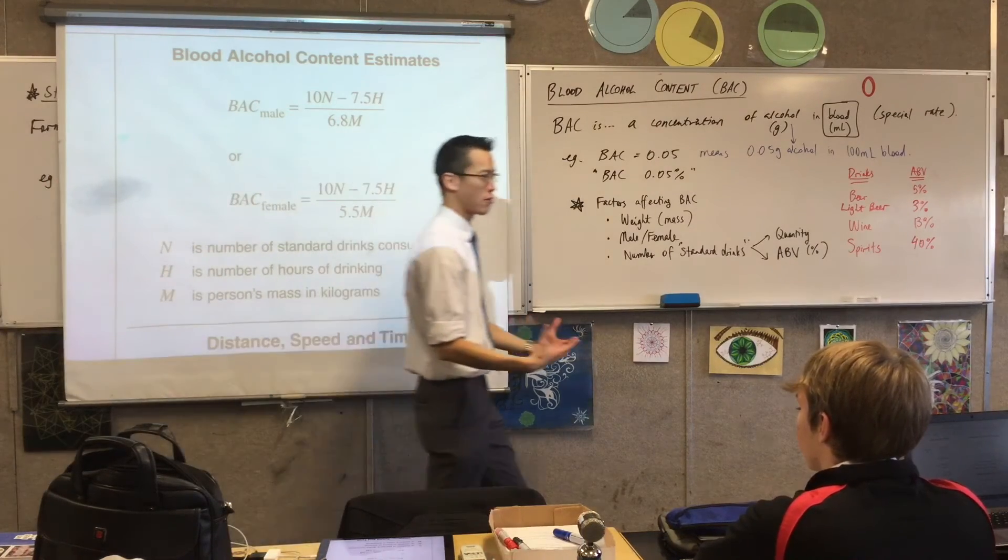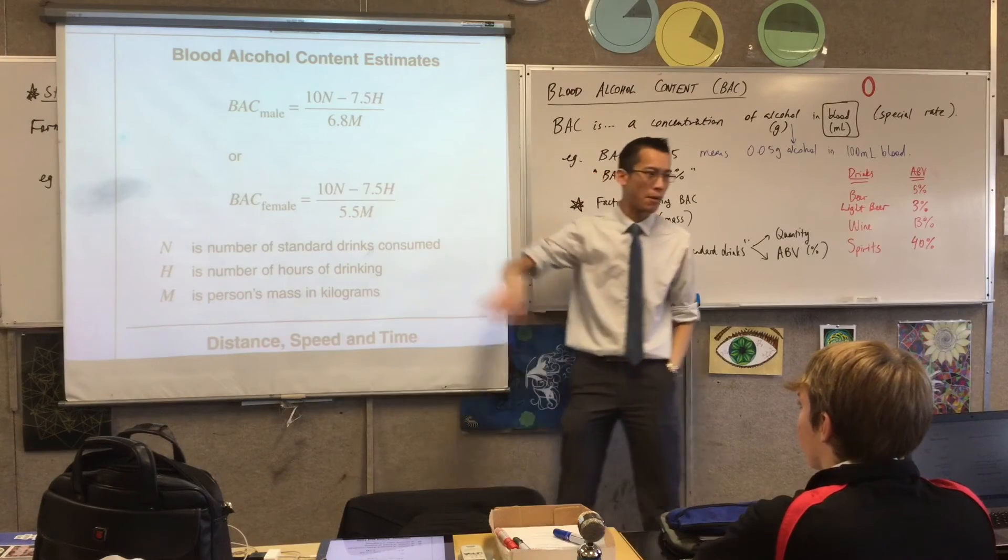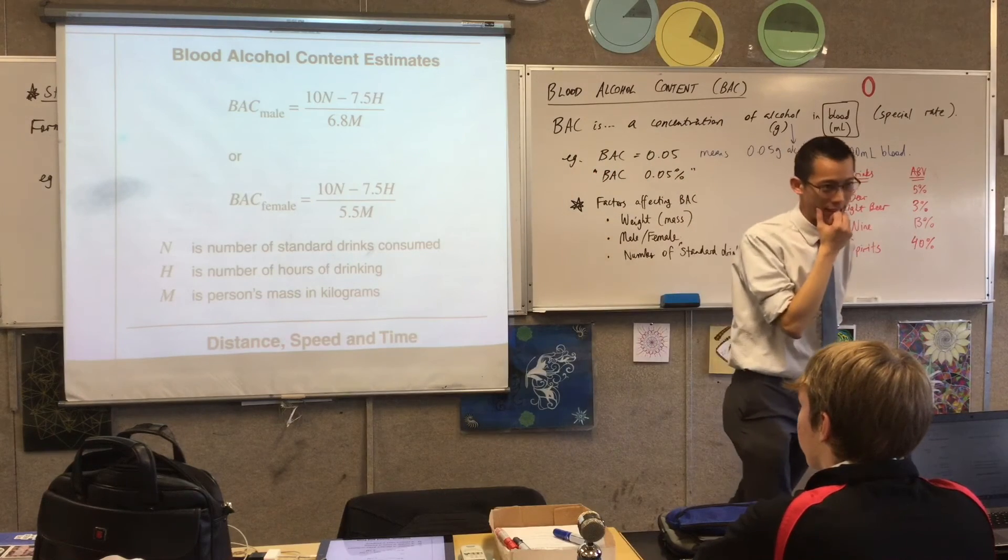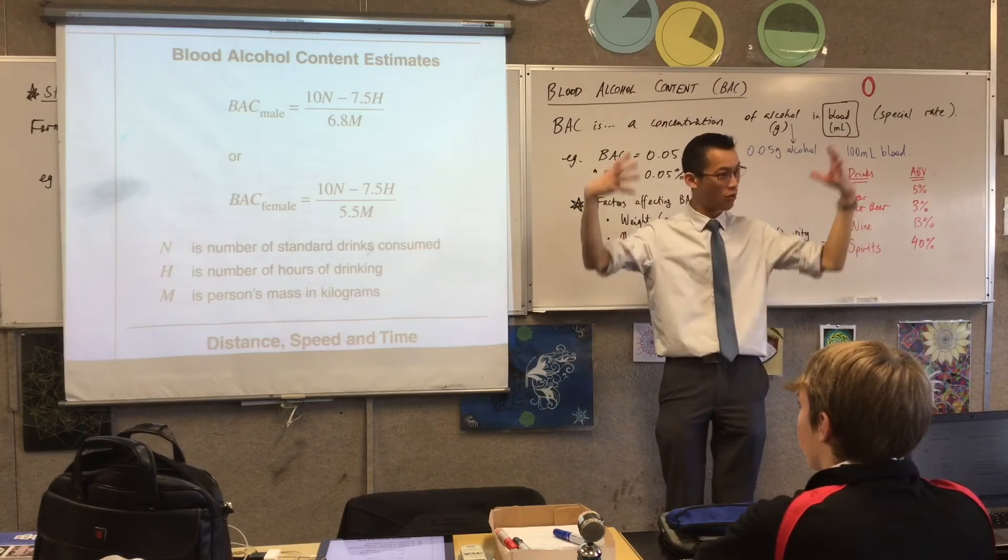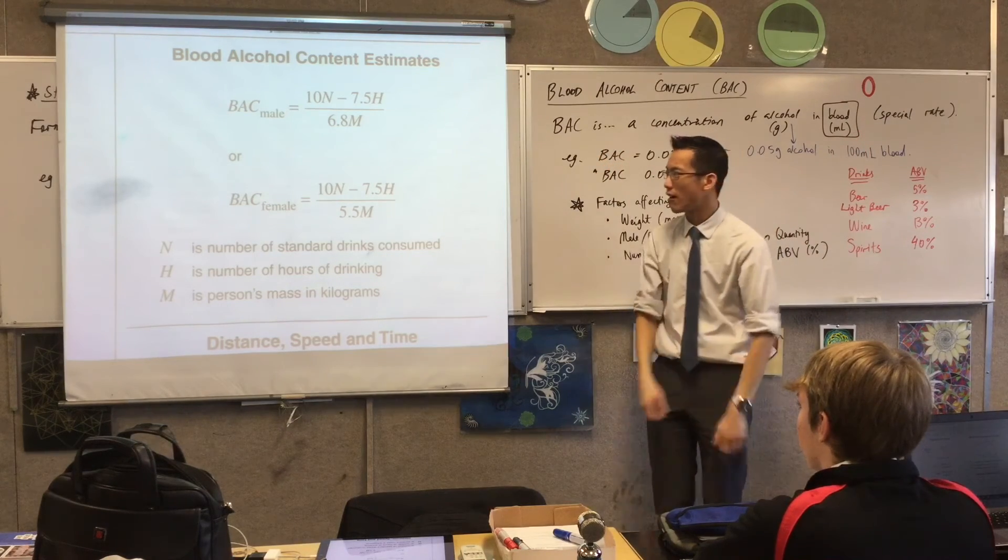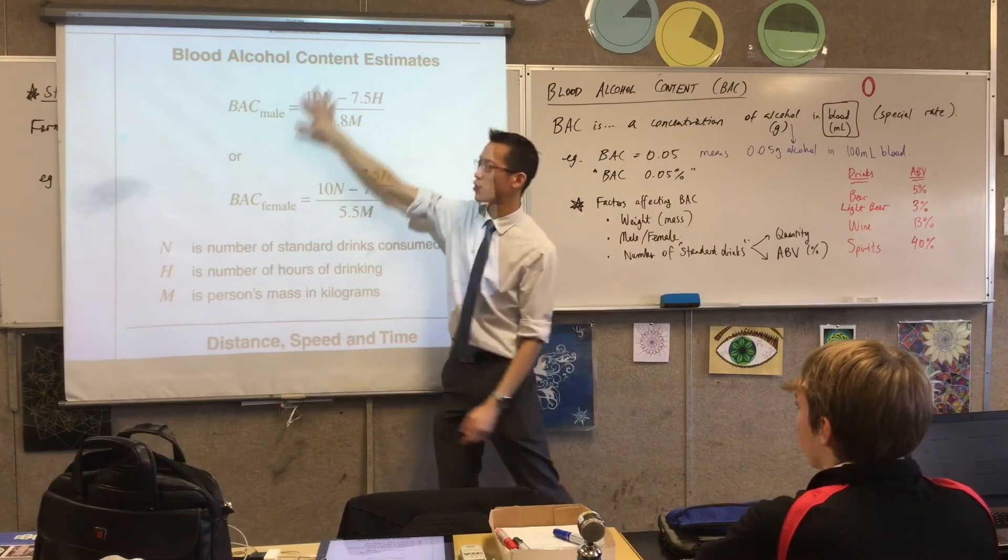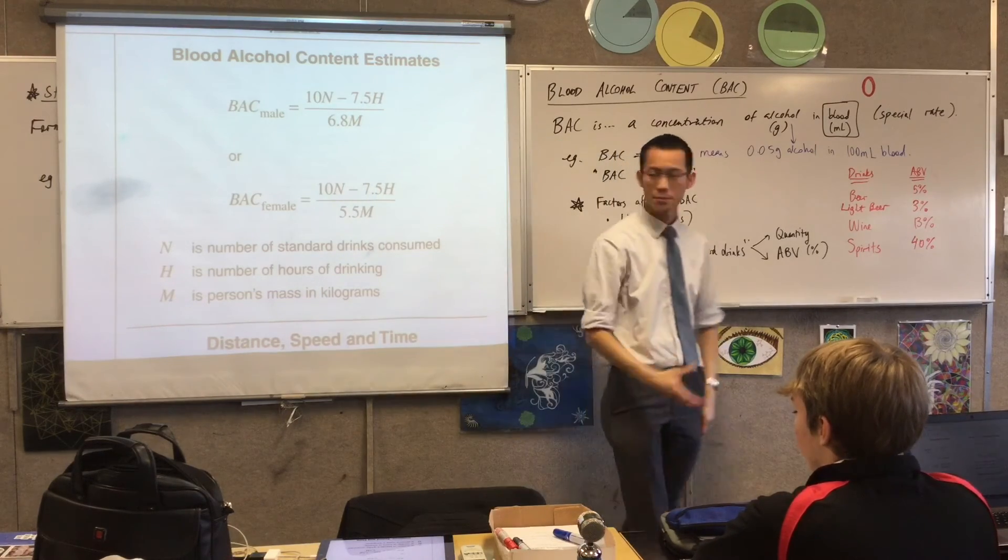As you get heavier, right, how does that affect the whole number? If the denominator is getting bigger, if the denominator is getting bigger, the whole number is getting smaller, right? So the more you weigh, the less it's actually going to have a total effect on your blood alcohol content, okay?